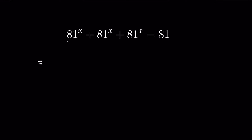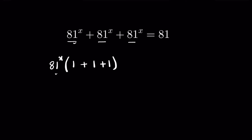Here all the numbers are the same, so we can take 81 raised to the power x as common. So 81 raised to the power x, divided by 81 raised to the power x is equal to 1, giving us 1 plus 1 plus 1, so 81 raised to the power x times 3 is equal to 81.